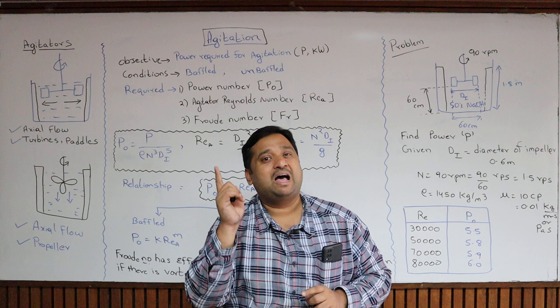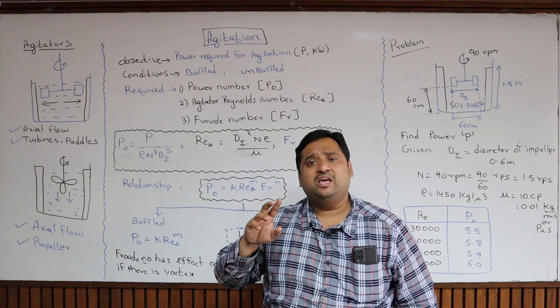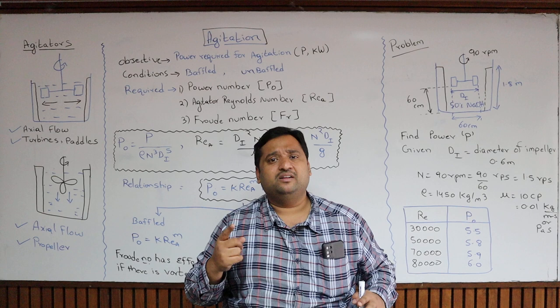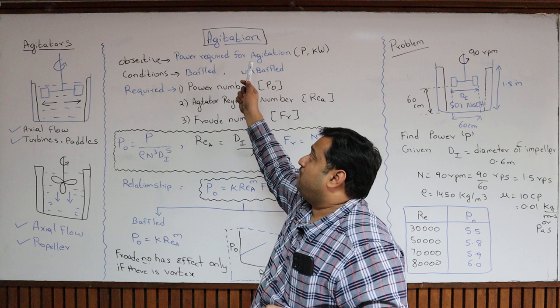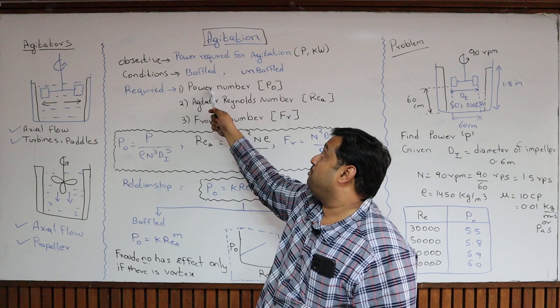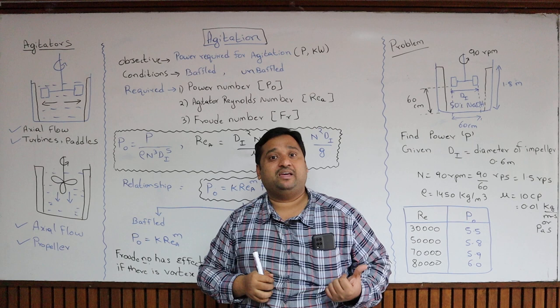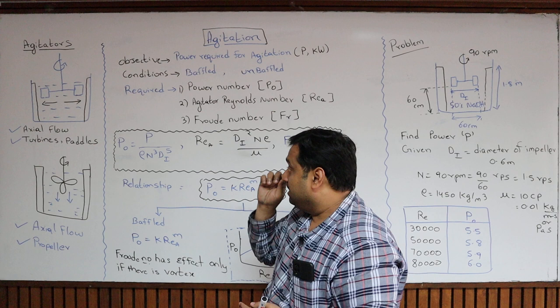In an unbaffled tank, mixing will not happen efficiently because a vortex forms. To avoid the vortex and promote mixing, the agitator must rotate at higher speeds, requiring more power. In a baffled tank, with less power you can create more mixing. To calculate the power, I need three things: the power number, the agitator Reynolds number, and the Froude number.